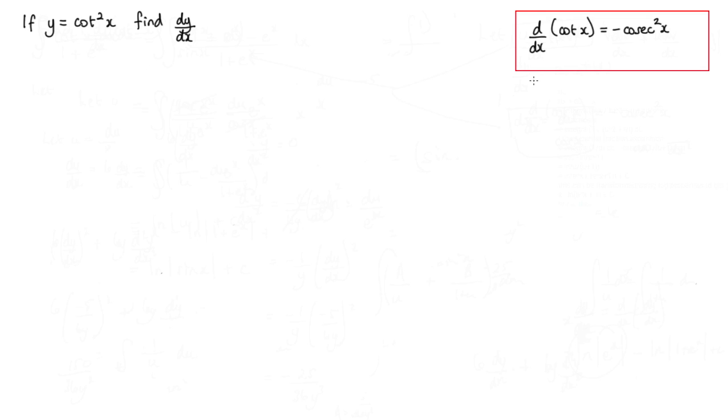Now a little bit that might help you is that when we differentiate cot x, we get negative cosec squared x. So keep that in mind.